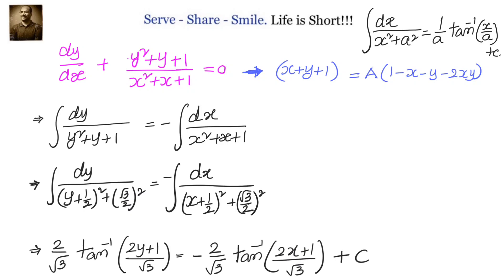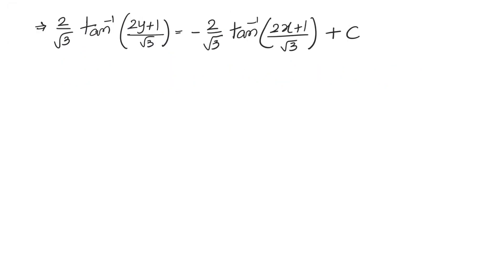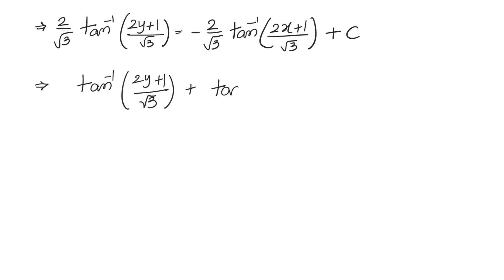Plus a constant c. Now let us bring both tan inverse terms to the left hand side and keep the constant on the right hand side. Multiply through by √3/2 to get it in the form tan⁻¹(x) + tan⁻¹(y). We will have tan⁻¹((2y+1)/√3) + tan⁻¹((2x+1)/√3) equal to some constant c′, where c′ = (√3/2)·c.